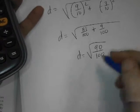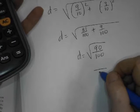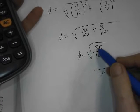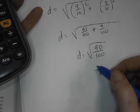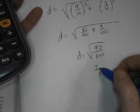Square root of 100 is 10. Square root of 90 is... Well, 9 times 10, right? So square root of 9 is 3. I got that number.